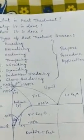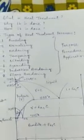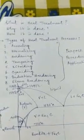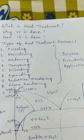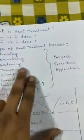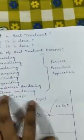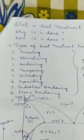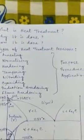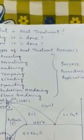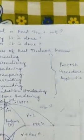The heat treatment processes include annealing, case hardening, tempering, normalizing, quenching, nitriding, induction hardening, and flame hardening — basically eight types. We will learn the types of heat treatment, their procedures, and applications.